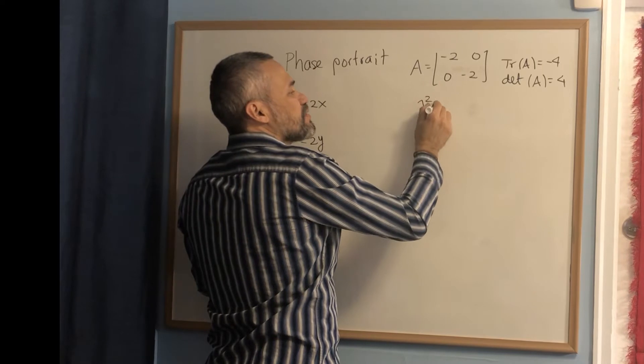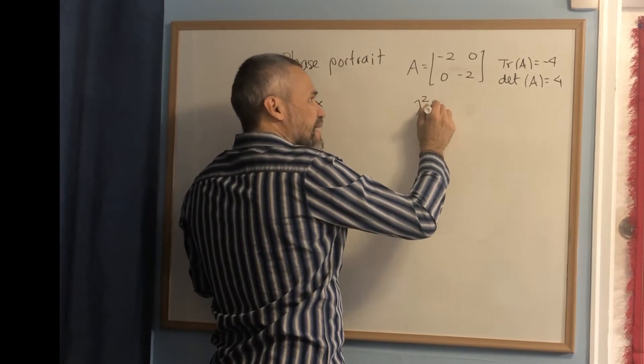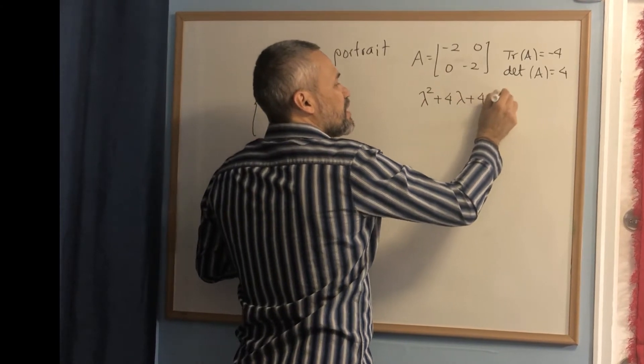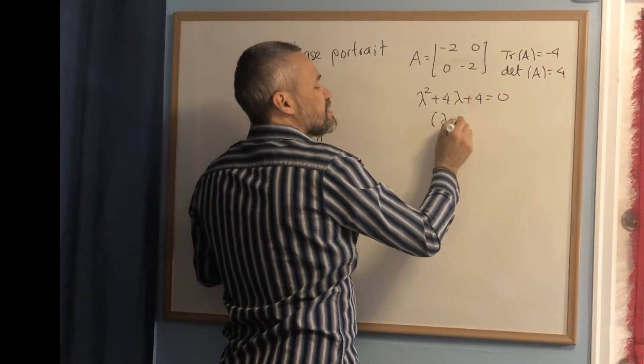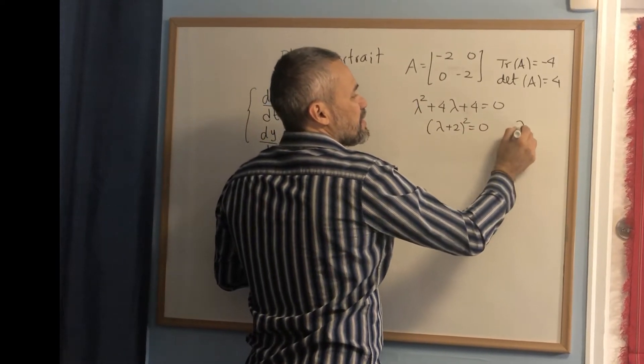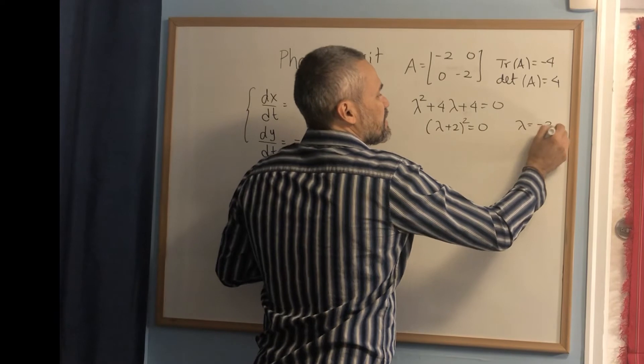Then, we have lambda squared minus the trace. That means negative 4 times lambda plus 4 equals 0. And this is lambda plus 2 squared equals 0. That means that lambda equals negative 2.